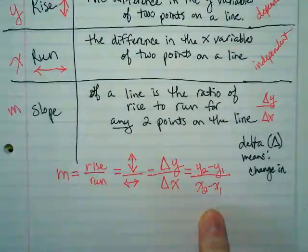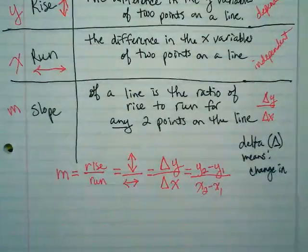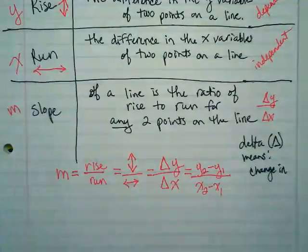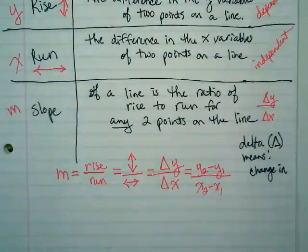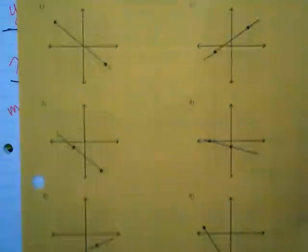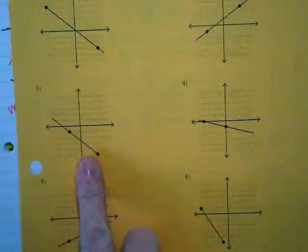The sub 2 sub 1 thing kind of makes it seem like it has to be specific ones. It doesn't - it's any two points on the line. Okay, so last week you guys had this paper. Let's look at number three.